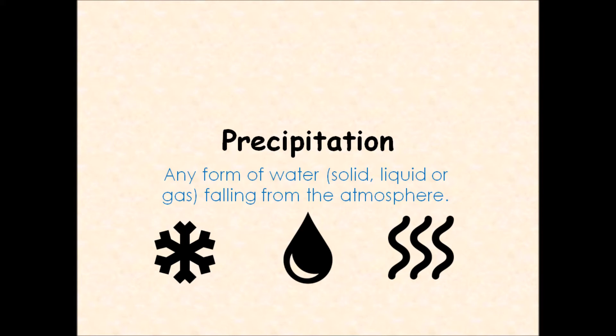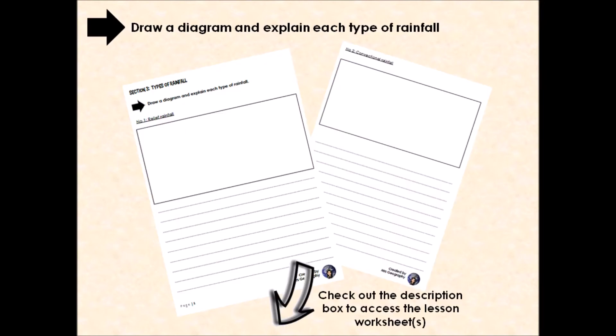This particular video is going to focus on the types of rainfall that we can get on our planet. There are three different types of rainfall. If you're completing this lesson using the worksheets that are available in the description box below, you will find on those worksheets the three types of rainfall and the names, a box to draw a diagram in to show that type of rainfall, as well as lots of lines underneath so you can explain step by step how that type of rainfall is created.